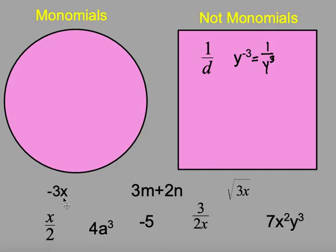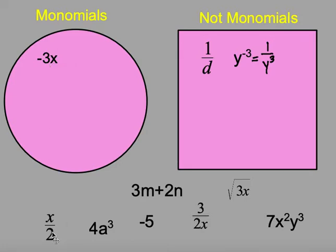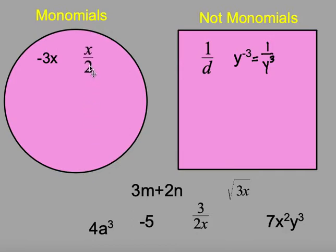If I look at negative three x, I have a number multiplied to a variable — that goes into monomials. Here I have x divided by two; I'm not dividing by the variable, I'm taking the variable and cutting it in half. So I count that as a monomial. I can write that as one half times x, therefore it counts as a monomial.